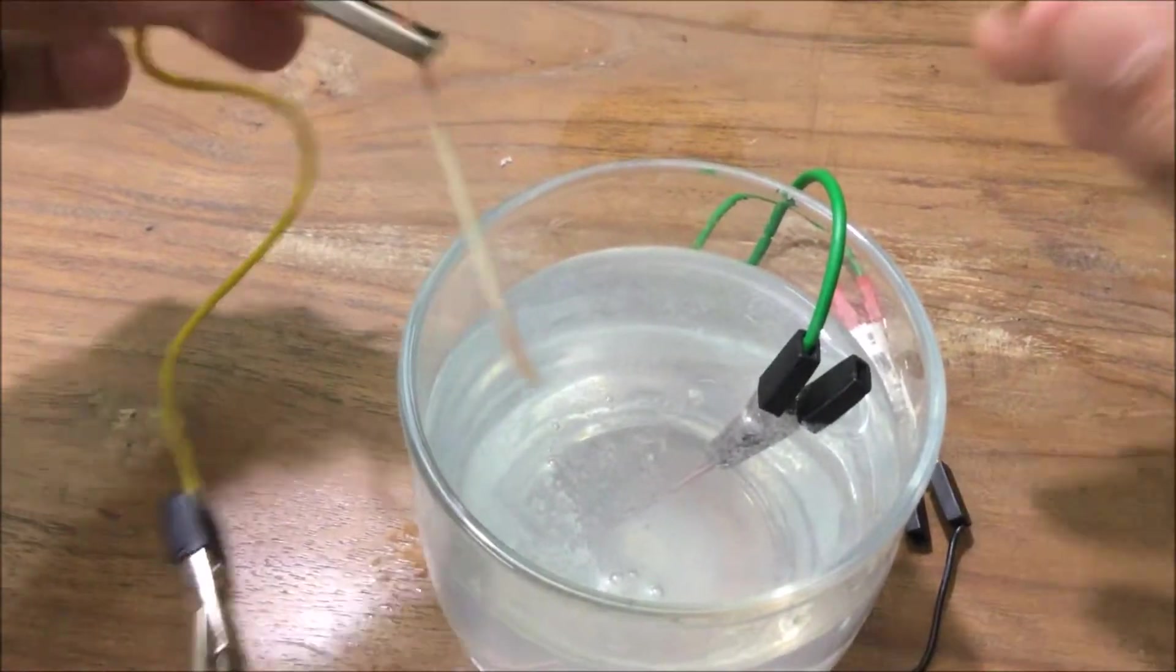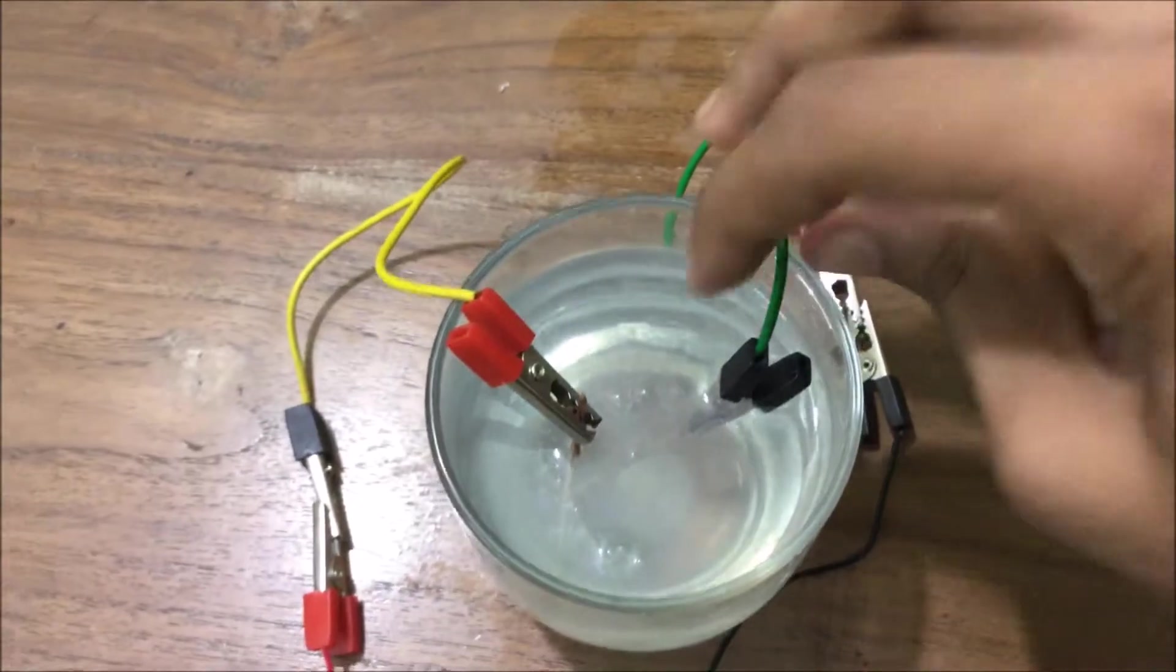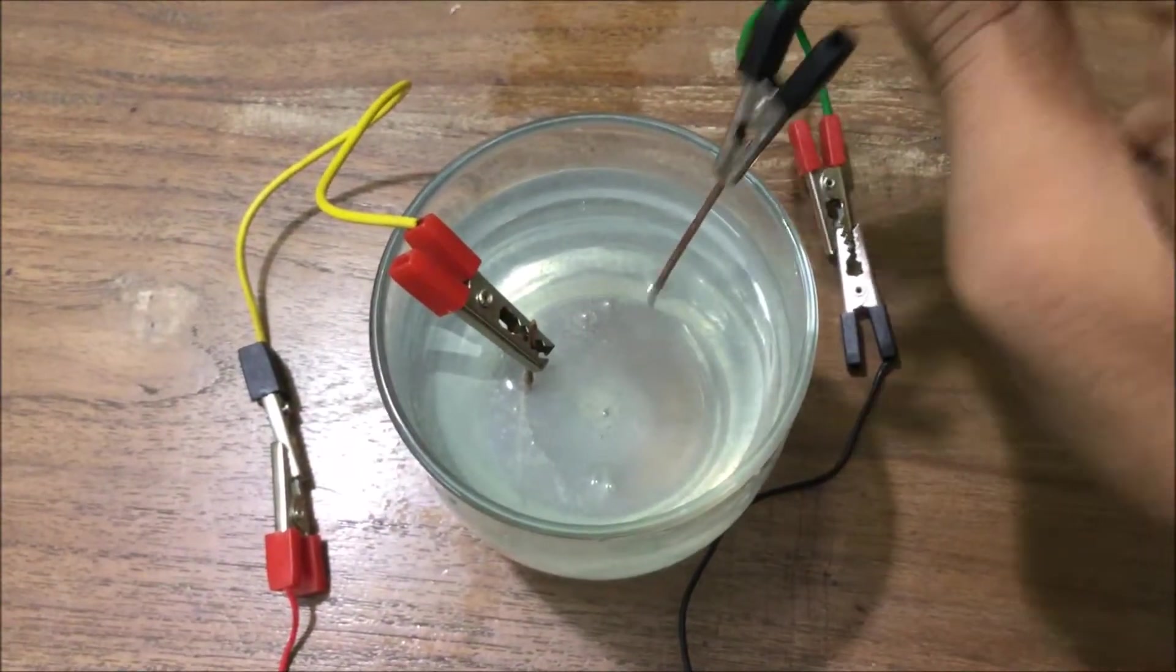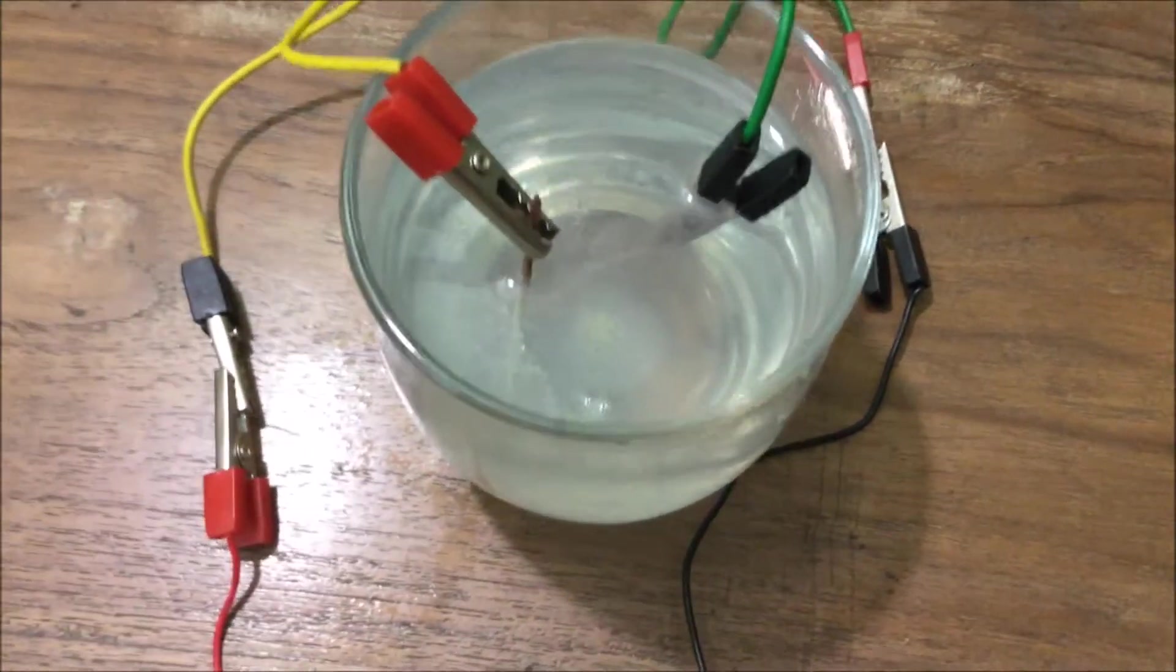And then this rod is containing chlorine gas because it is the positive electrode. And the gas bubbling on the top is the hydrogen gas.